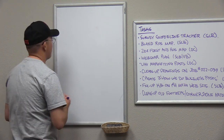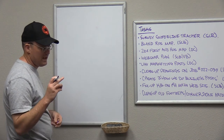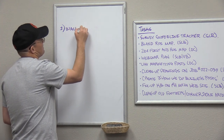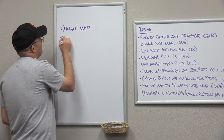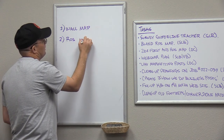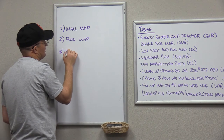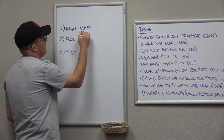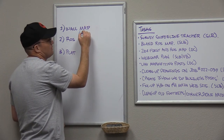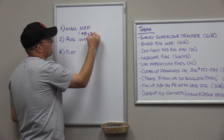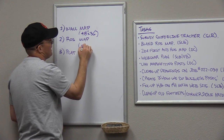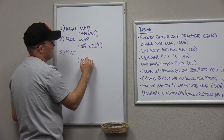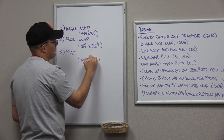Here's an example: we have a project in Martinez where we already have three primary work products. We have a wall map — a big map the attorney wanted to lay out on a table — we have a record of survey map, and we have a plat for a land description. The wall map was 48 by 36 inches. The record of survey map, by statute in California, has to be 18 by 26 inches. The plat, by statute, is 8.5 by 11 inches.